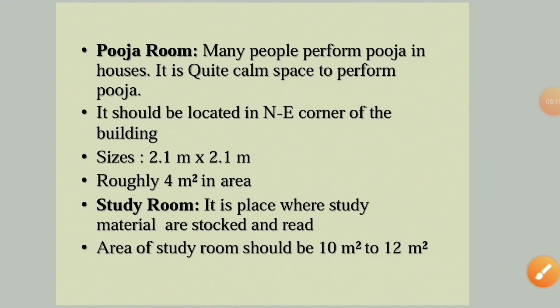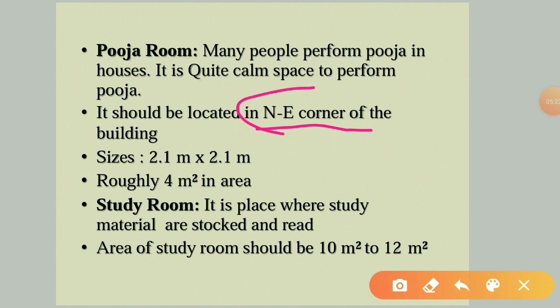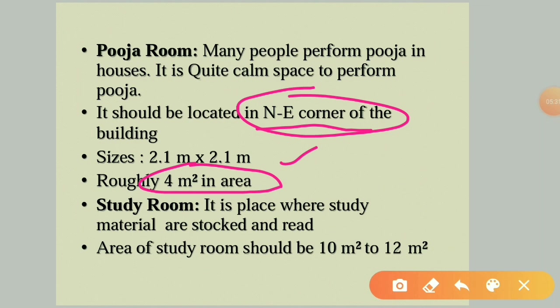Many people prefer a puja room in houses — a calm space to perform puja. It should be located in the northeast corner of the building. The size is typically 2.1m×2.1m, providing nearly 4 sq.m of area. The study room is a place where people study and store study material, with an area of 10 to 12 sq.m.